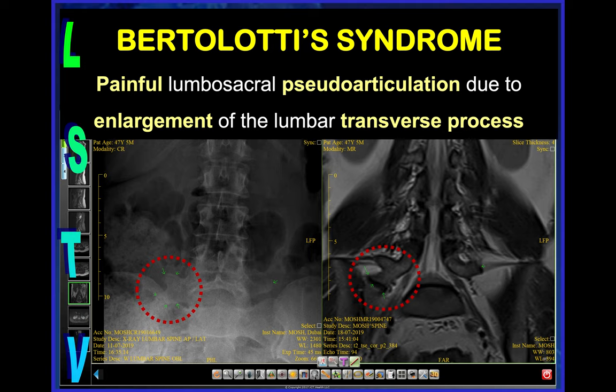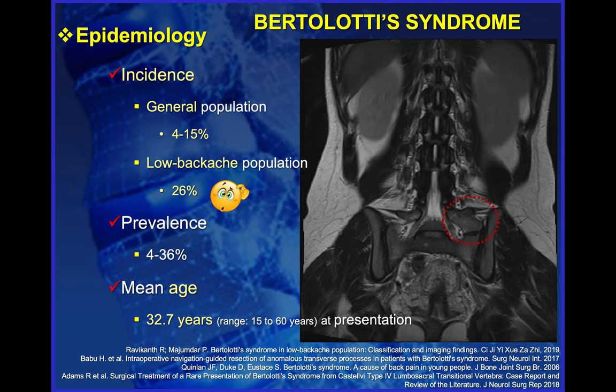A typical example shows this painful pseudo-joint visible on the X-ray and on the coronal view of the MRI. It affects around 5 to 10% of the population, but it's much more common among the young population with associated low back pain, especially paramedian pain. Symptoms usually start around 30 years old.